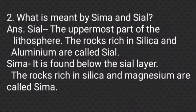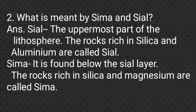Question number 2: What is meant by SIMA and SIAL? Answer: SIAL (S-I-A-L) — the uppermost part of the lithosphere. The rocks rich in silica and aluminium are called SIAL, where SI stands for silica and AL stands for aluminium. Then, SIMA (S-I-M-A) — it is found below the SIAL layer. The rocks rich in silica and magnesium are called SIMA, where SI stands for silica and MA stands for magnesium.